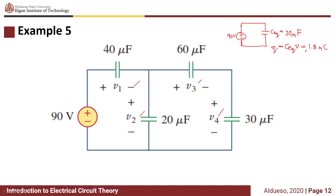The total charge of the capacitor is given by Q equals Ceq times voltage, giving us 1.8 millicoloumbs. If this is simplified into an equivalent circuit, the total charge is just the charge in the 40 microfarad capacitor. So for V1, we have Qt equivalent to 40 micro times V1. Using that Qt value, we can now solve for V1, which equals 45 volts.